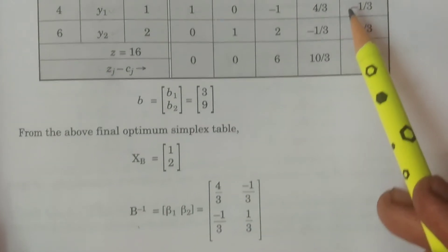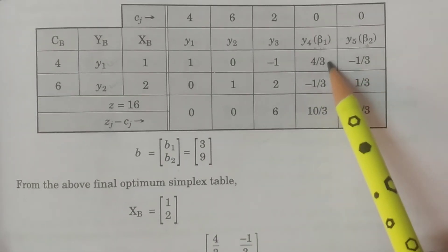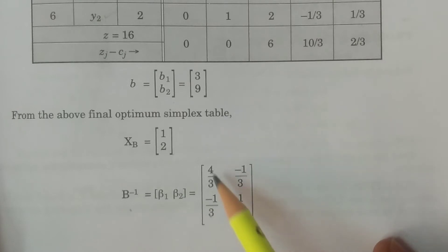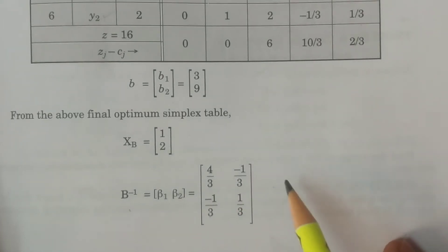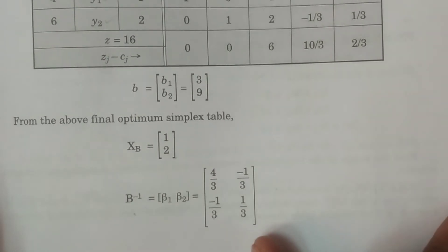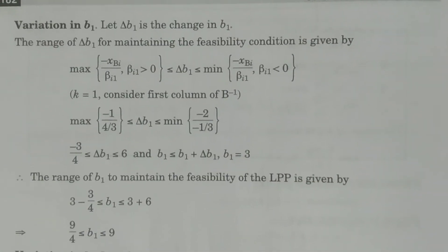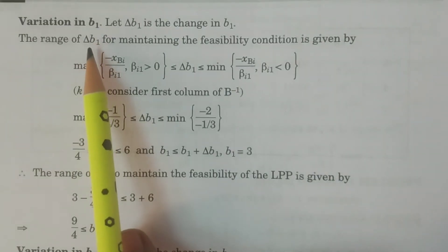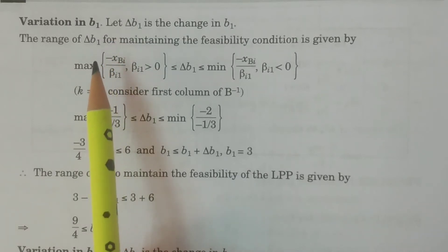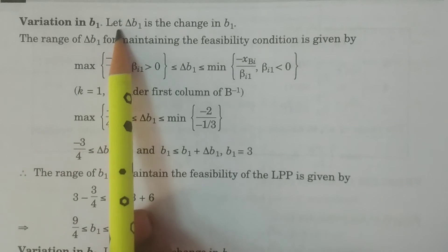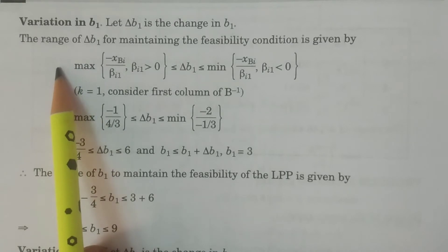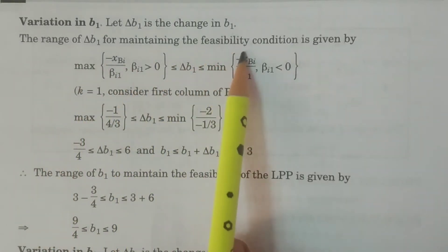Beta 1 and beta 2 are column vectors: 4/3, -1/3 and -1/3, 1/3 respectively, as observed from the final optimum simplex table. Simply write B inverse equal to [beta 1, beta 2]. Now, if you see the variations in B1 — the change is generally considered as B1 plus delta B1, where delta B1 is the change in B1. Then we have to consider the range of delta B1 for maintaining the feasibility condition.